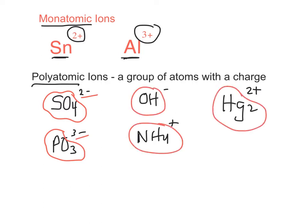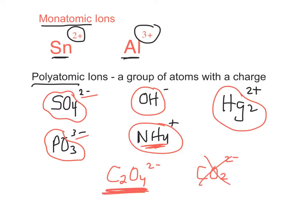The trick to dealing with polyatomic ions is they're a thing — you can't change them. For instance, C2O4 2- is a polyatomic ion. Sometimes it's tempting to ask, can I just call it CO2 2-? No, you can't. You can't change it. It is what it is. We're not going to shorten it, reduce it, or do anything to it.